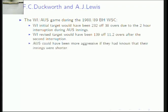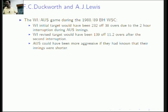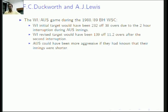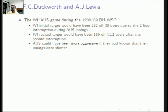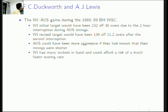West Indies was set a higher target because Australia did not have an opportunity to make the best of the fewer overs — had they known about the interruption, they could have been more aggressive in the first few overs. So the DL method accounts for this and sets a correspondingly higher target for the chasing side.